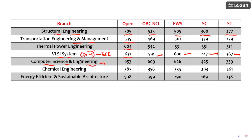Computer Science and Engineering, one of the most demanded branches, has a cutoff of 653 for Open category, OBC Non-Creamy Layer 609, EWS 626, SC 425, ST 339. Next, Chemical Engineering and Energy Efficient and Sustainable Architecture are also given here. You can pause the video and go through each and every branch cutoff for your category and analyze whether you can get a seat in that branch.